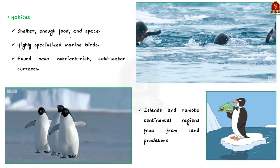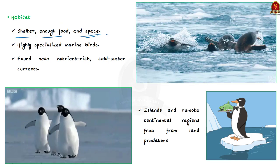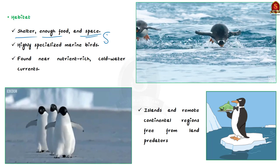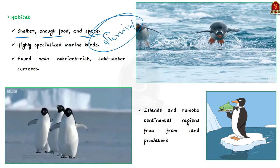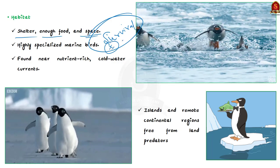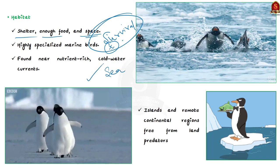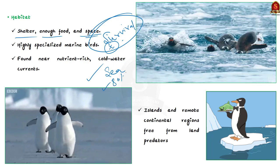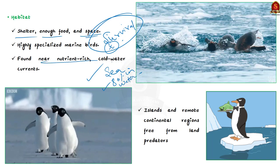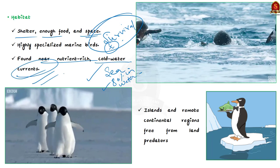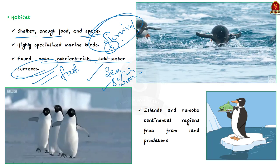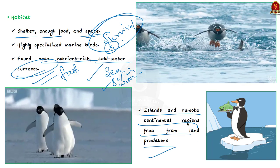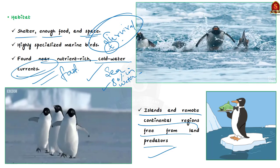Penguins require habitats where nature provides shelter, enough food, and space to interact and reproduce. These highly specialized marine birds are adapted to living at sea; some species spend up to 80% of their life in the water and only use icebergs as places to rest. Penguins are usually found near nutrient-rich cold water currents that provide an abundant food supply. When settling, they generally live on islands and remote continental regions free from land predators.